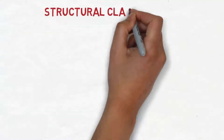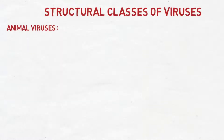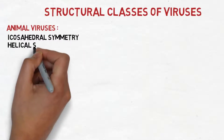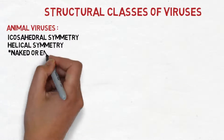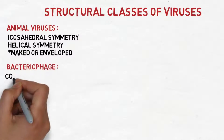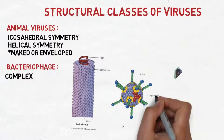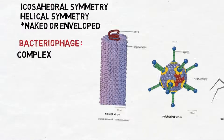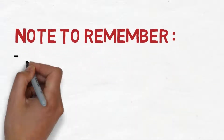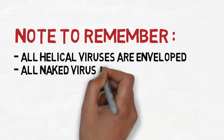Moving to the structural classes of viruses, there are three types of viruses according to structure. Two are related to animal viruses: icosahedral symmetry and helical symmetry. They can either be naked or enveloped. The third one is related to bacteria, which we call a complex virus. You must keep in mind that all helical viruses are enveloped and all naked viruses are icosahedral.